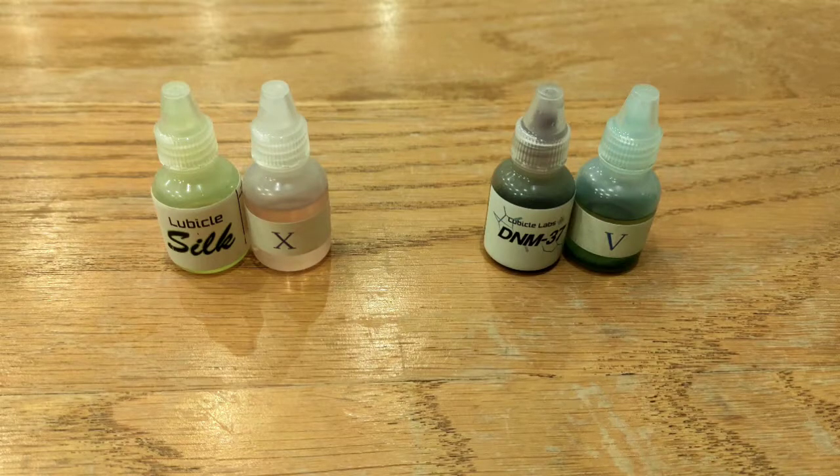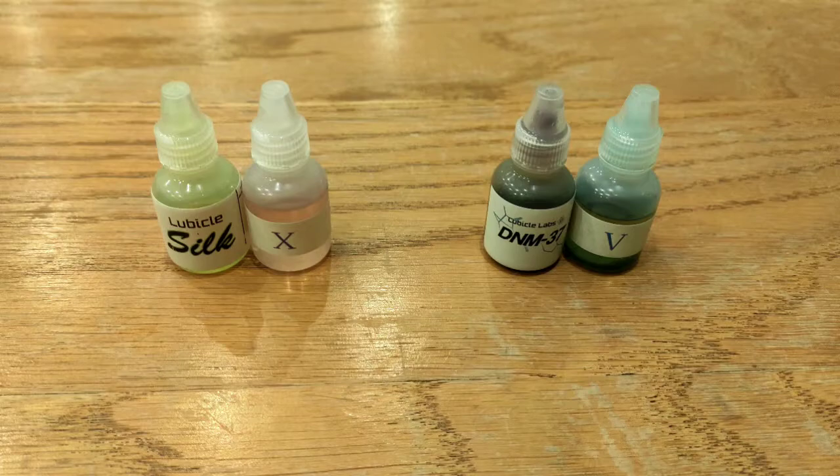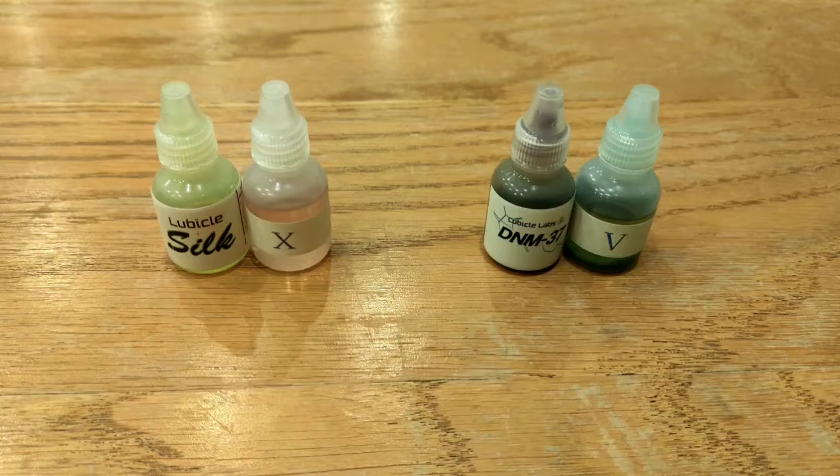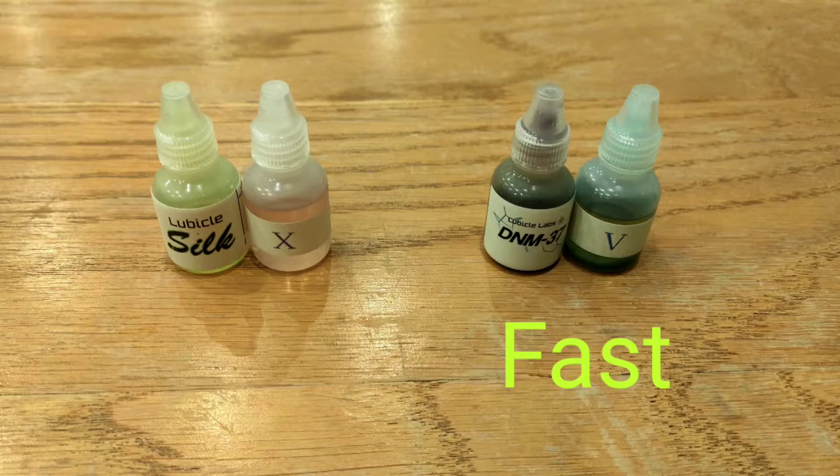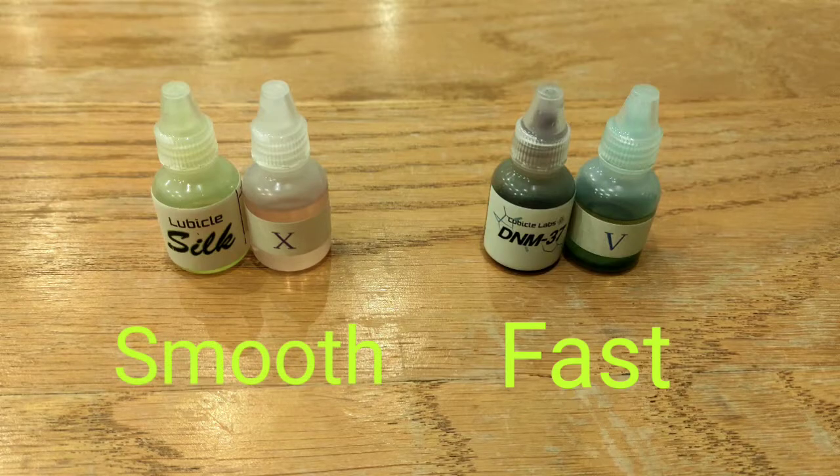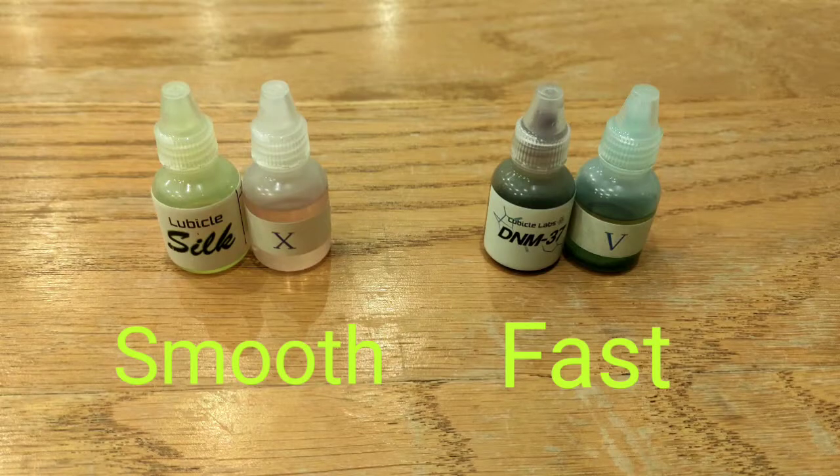Next, I think we should focus on these four lubes. Angstrom compound V and X, Lubical Silk and DNM37. So Angstrom compound V and DNM37 make the cube faster, and Lubical Silk and Angstrom compound X make the cube smoother. These are effects that you really want to have. So which of the options are better?